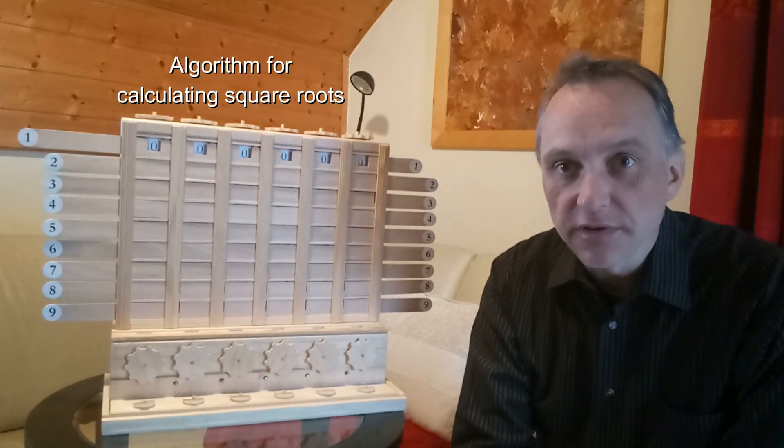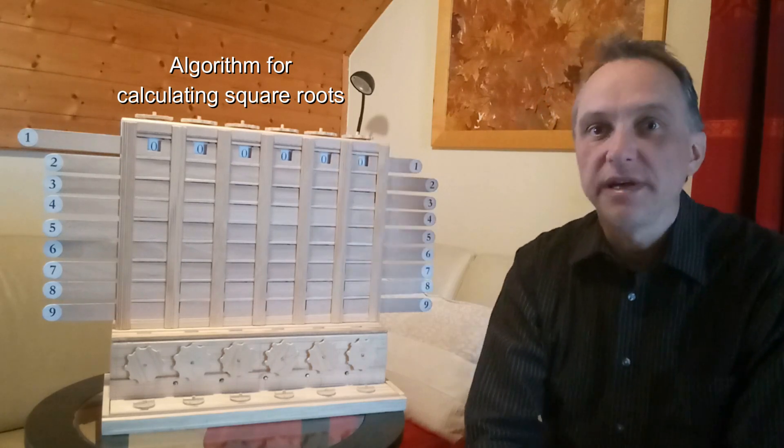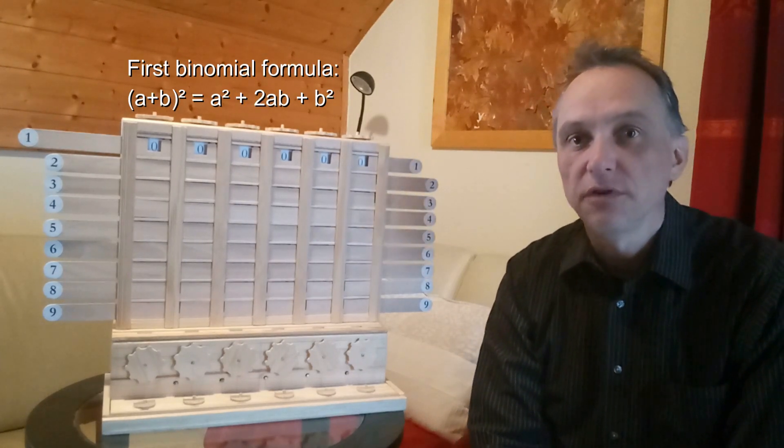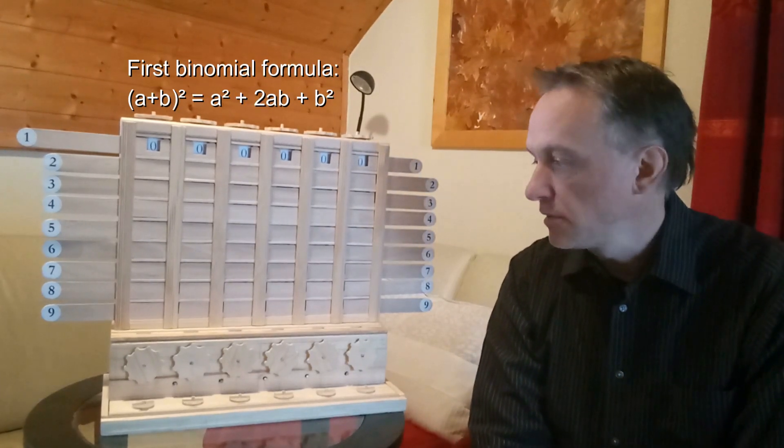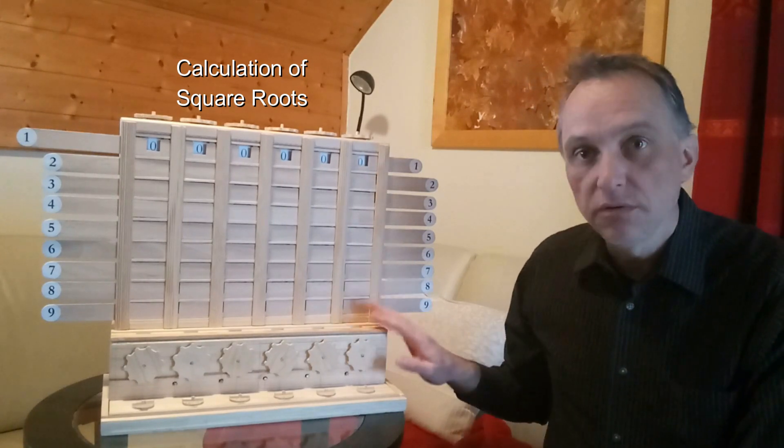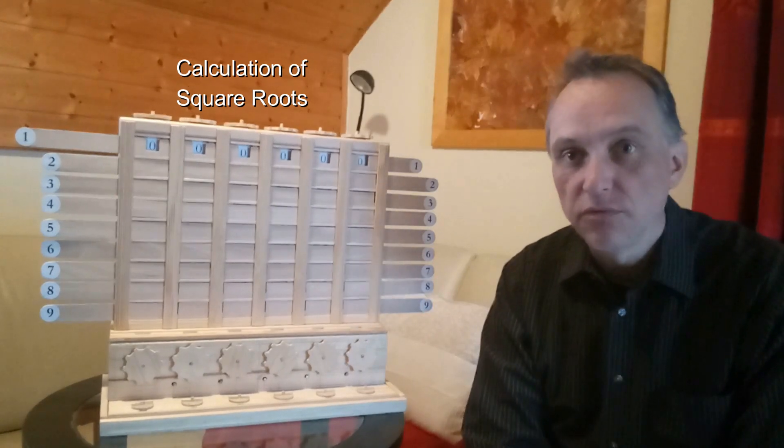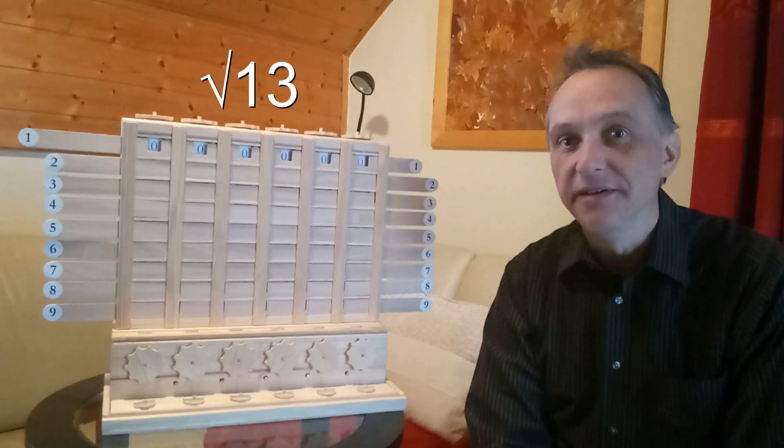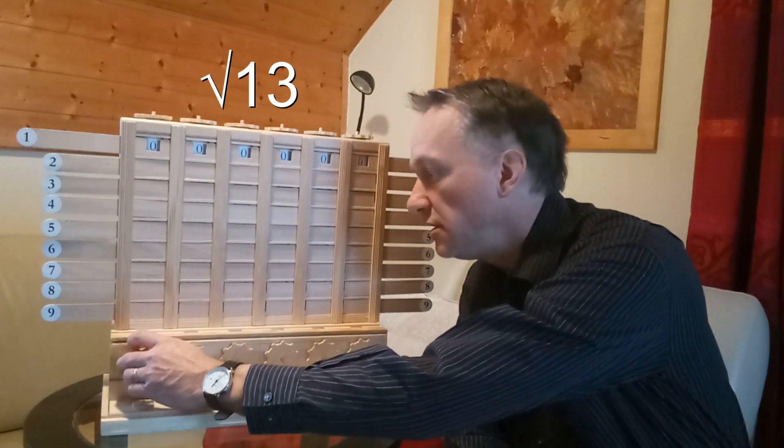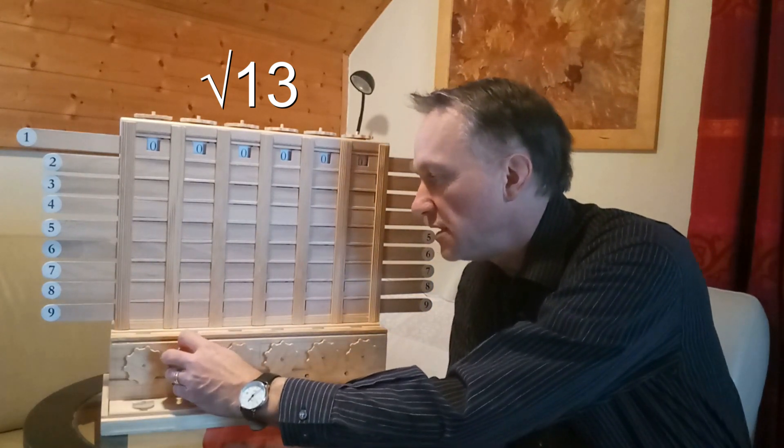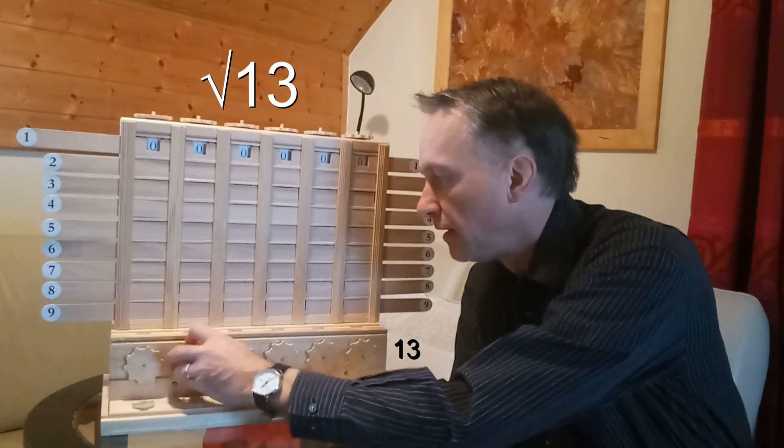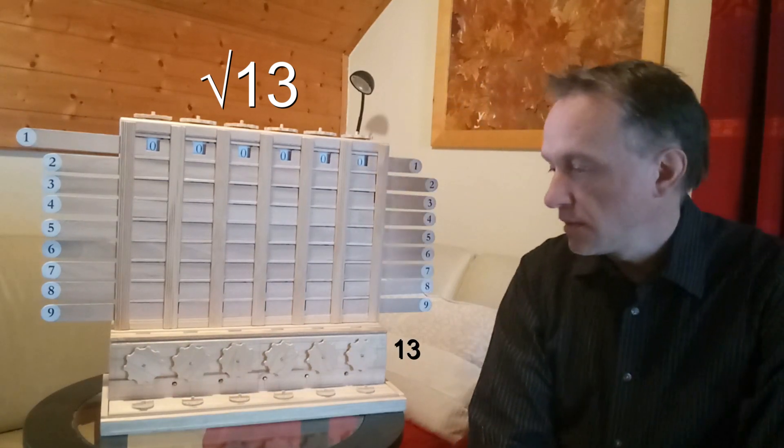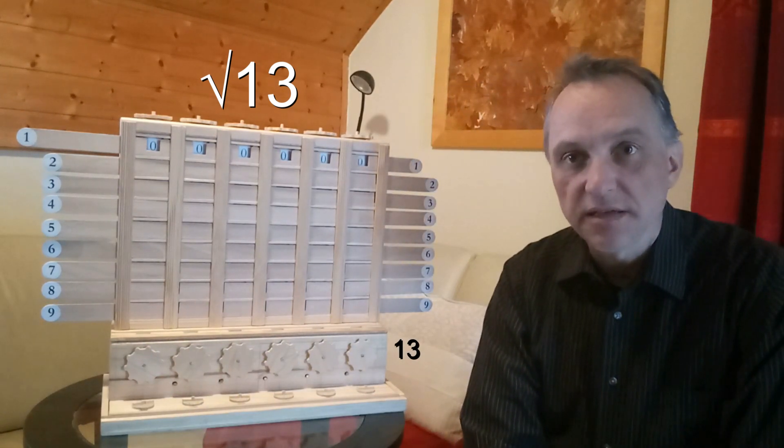The algorithm for calculating square roots is based on the first binomial formula and I want to show the calculation of a square root with an example. So let's calculate the square root of 13. I'm entering 13 on the left side of the adder and let's see how the calculation works.